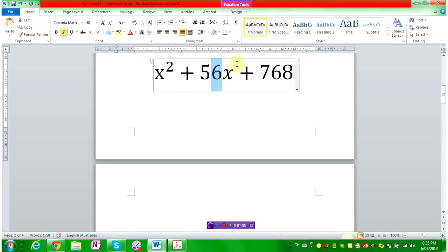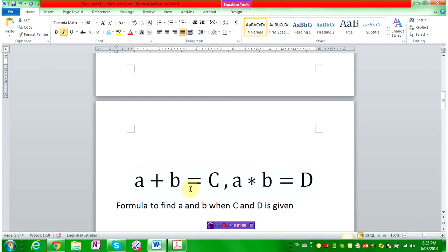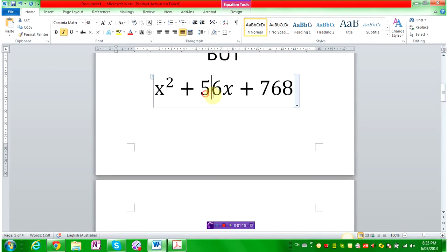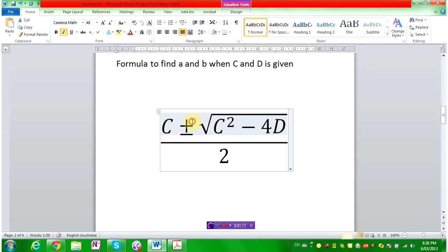C here is 56. And D, D here is 768. And I'm going to show you a formula to find a and b when you know these numbers. You don't need to use your brain. There's a formula for it, guys. Now I'm here to show you. I just discovered it and now I'm here to show you.